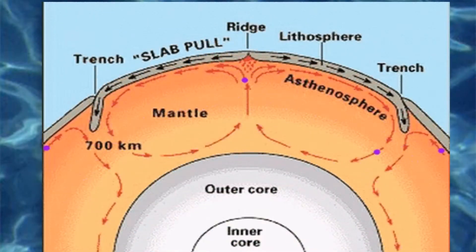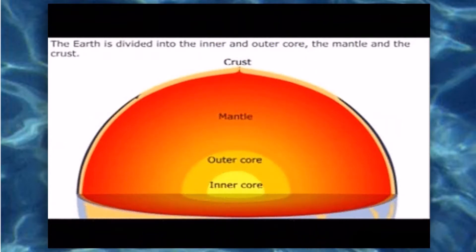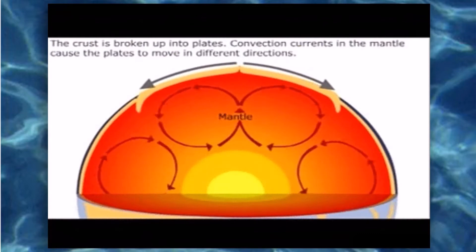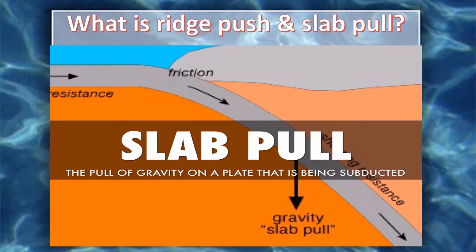The lithosphere cools as it moves away from the ridge, and the boundary between the solid lithosphere and the slightly molten asthenosphere becomes deeper. This boundary is essentially a temperature boundary. As the lithosphere thickens with distance from the ridge, the lithosphere-asthenosphere boundary slopes away from the ridge. The weight of the lithosphere on this sloping surface produces a downslope force. Since the asthenosphere is weak, the weight of the lithosphere near the ridge sliding down the slippery slope pushes the older part of the plate in front of it.